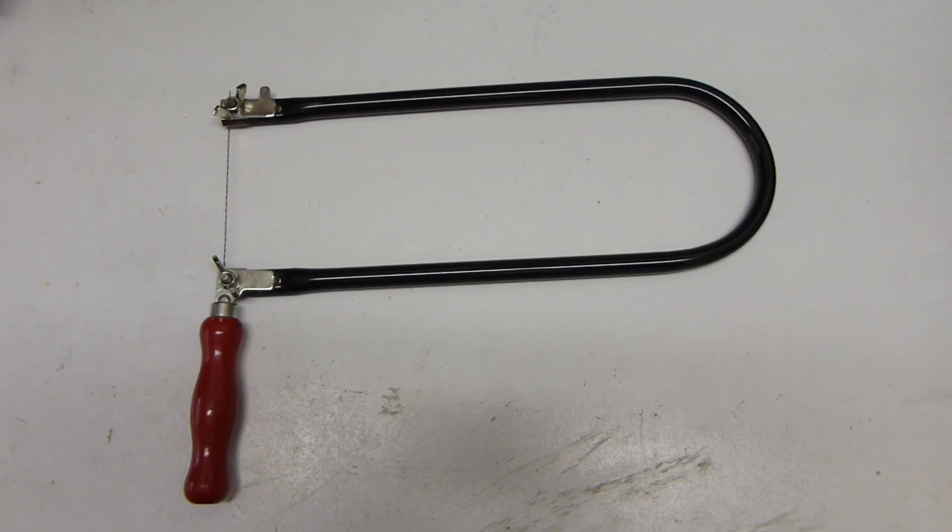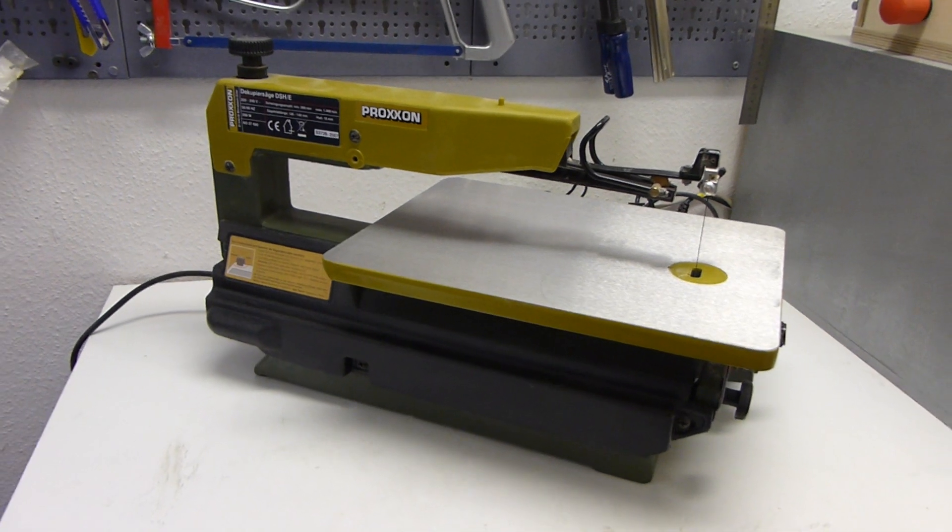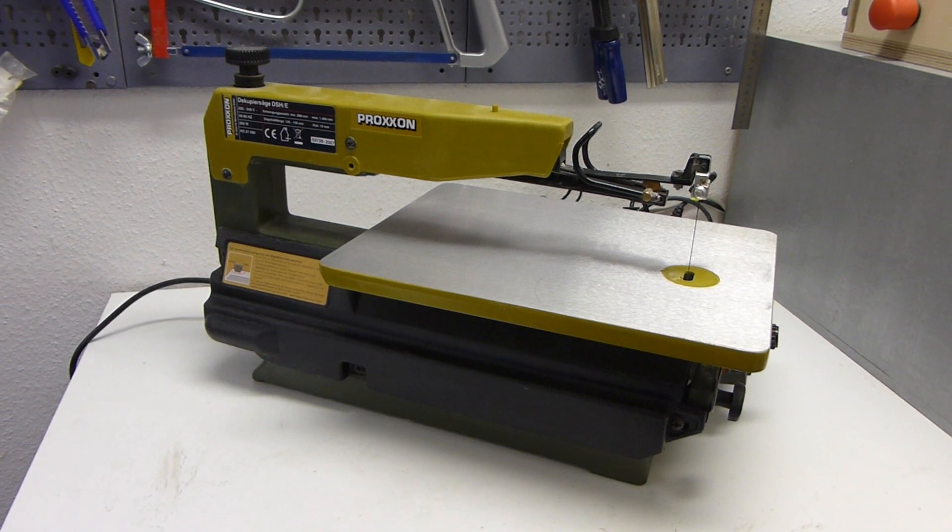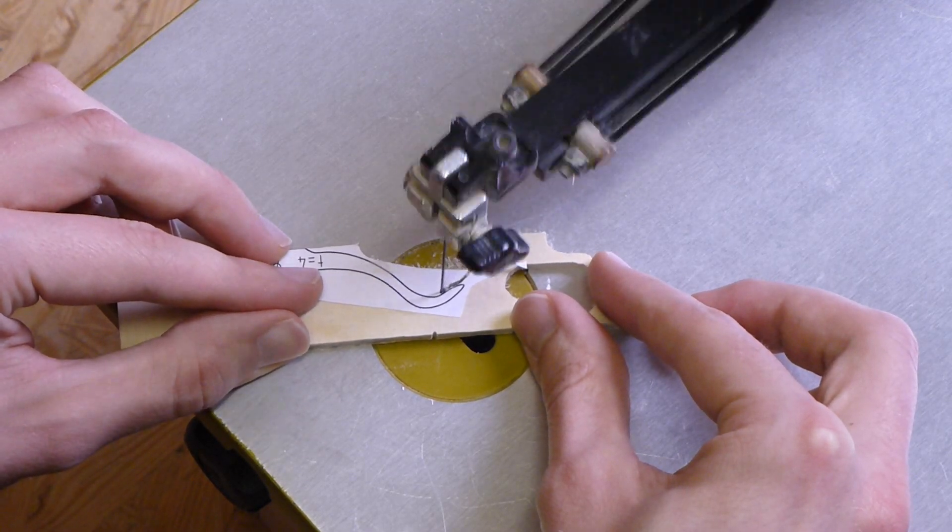Zum Aussägen der wenigen Teile reicht eine Laubsäge. Wenn man eine Dekupiersäge hat, geht es etwas schneller. Ich verwende meist Rundsägeblätter.